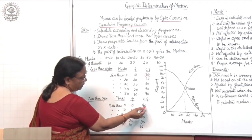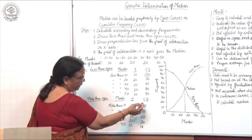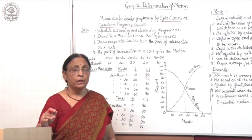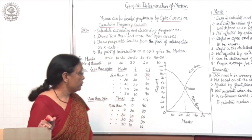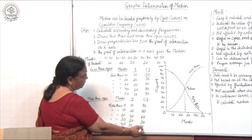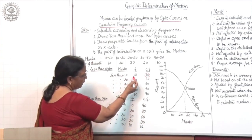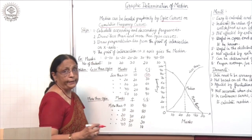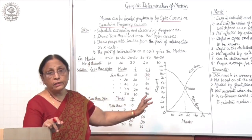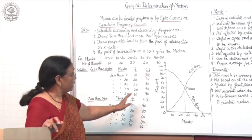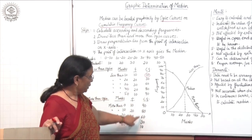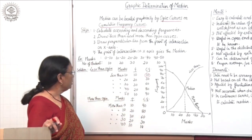For the more than ojive, more than 0 is 90 because total frequencies are 90 — all students score more than 0. Then more than 10 is 90 minus 10, which is 80. You continue in descending order. Arrange the frequencies in less than and more than cumulative order as you have practiced earlier.